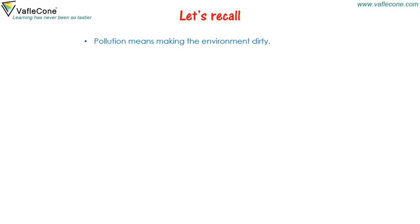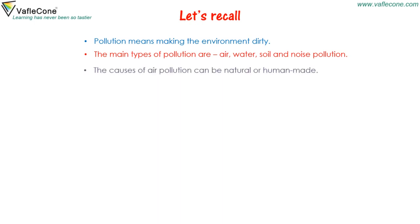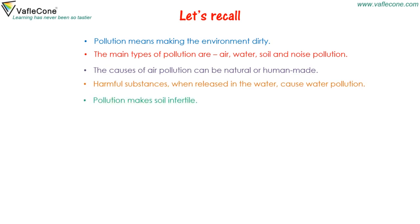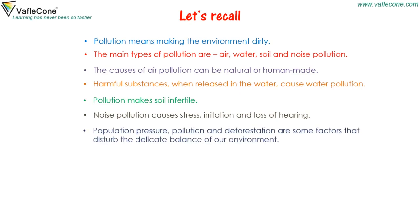Let's recall: pollution means making the environment dirty. The main types of pollution are air, water, soil and noise pollution. The cause of air pollution can be natural or human-made. Harmful substances when released in water cause water pollution. Pollution makes soil infertile. Noise pollution causes stress, irritation and loss of hearing. Population pressure, pollution and deforestation are some factors that disturb the delicate balance of our environment.